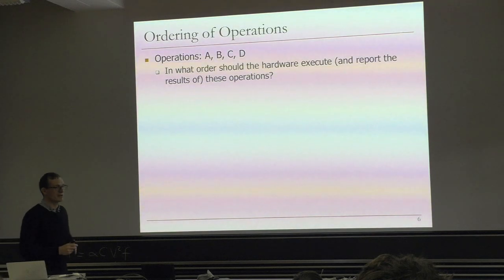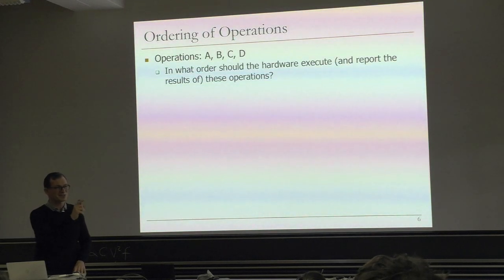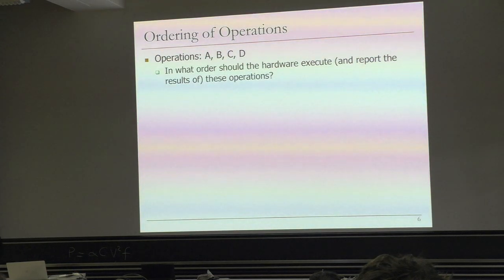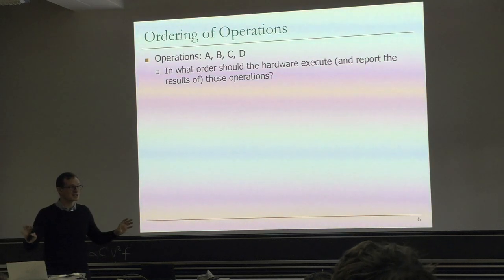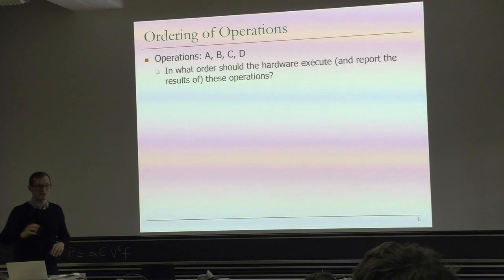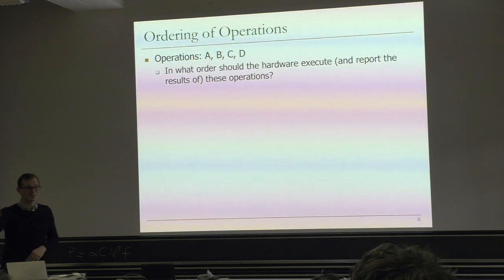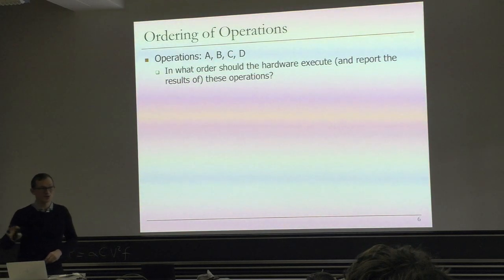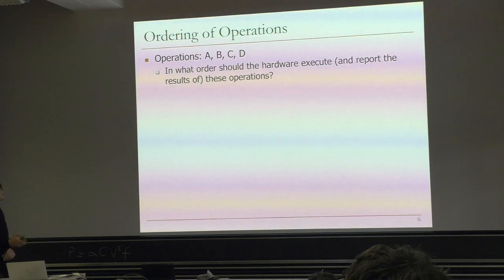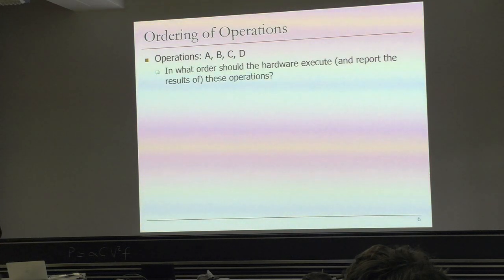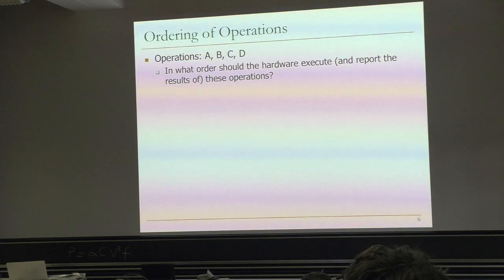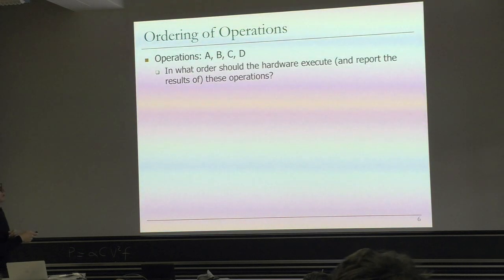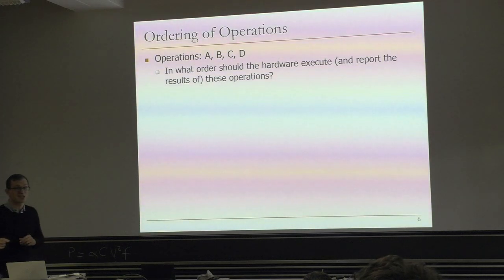Cache coherence is also really about high performance — if you punted the problem to the programmer, they could handle it, but they may not get high performance programs. Basically, we're talking about operations — in what order should the hardware execute these operations and report the results? Because the execution order and reported order may differ. Existing out-of-order execution machines execute operations completely out of program order internally, but when they retire, they update the architectural state in program order.